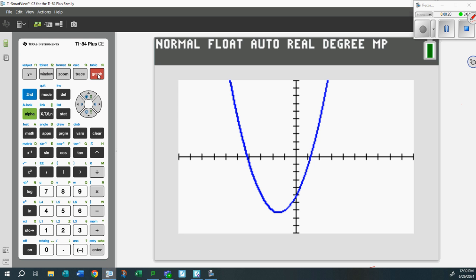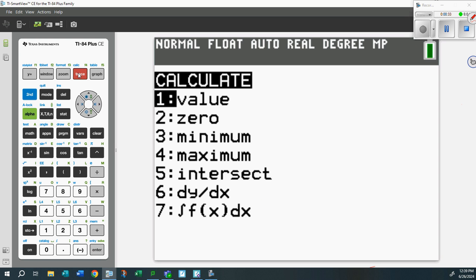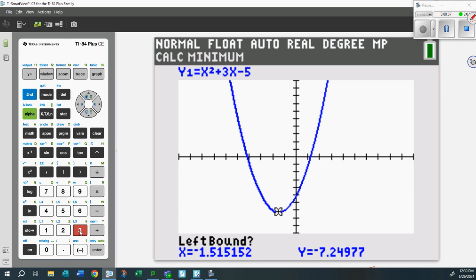On zoom standard, what is that vertex? Notice the vertex is the lowest point, meaning this is a minimum. Check this out: hit 2nd, hit CALC, and you can find the minimum - that's number 3. Now it asks you some questions.